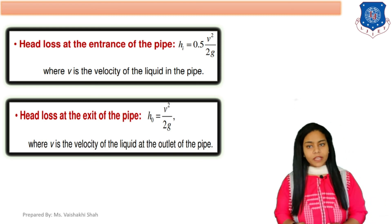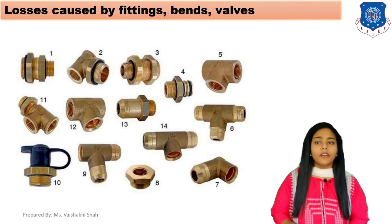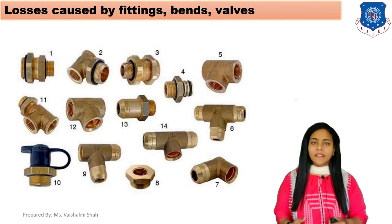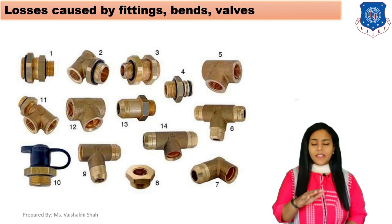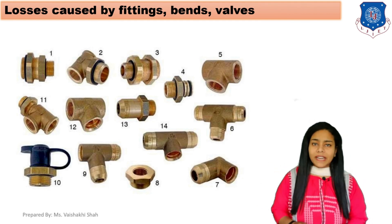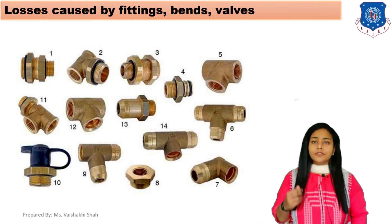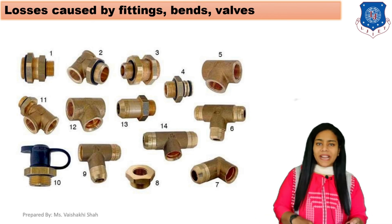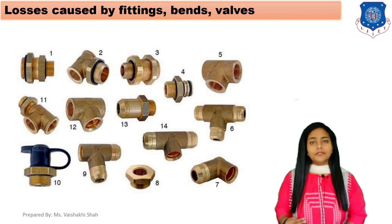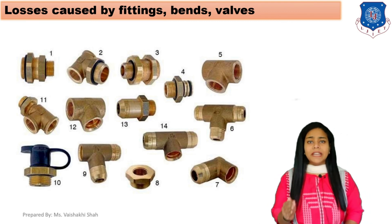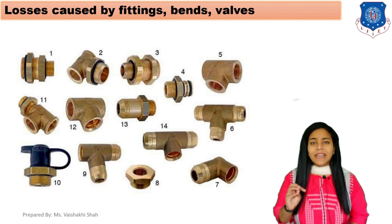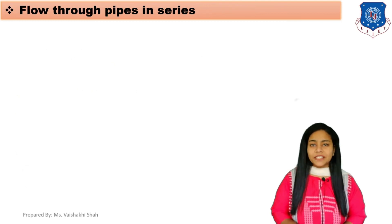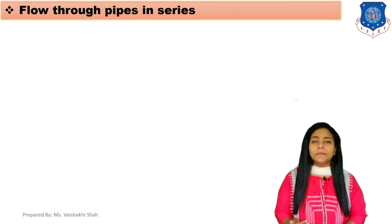There is another loss: head loss due to fittings, bends, or valves in the pipe. As you can see in this image, there are many joints provided in a pipeline. Due to these fittings, head loss also occurs. However, this head loss is very minor — we consider it a minor head loss because the amount of head loss is very small.